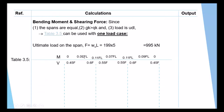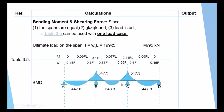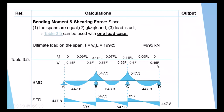Substituting F = 995 kN and L = 5 m into the Table 3.5 coefficients, we draw the bending moment diagram. The maximum negative moments at supports B and C are equal due to symmetry. The positive moment in the first and last spans uses coefficient 0.09FL, giving 447.8 kNm, while the middle span uses 0.07FL, giving a somewhat lower value of 348.3 kNm. We also use the shear coefficients to draw the shear force diagram with maximum values.